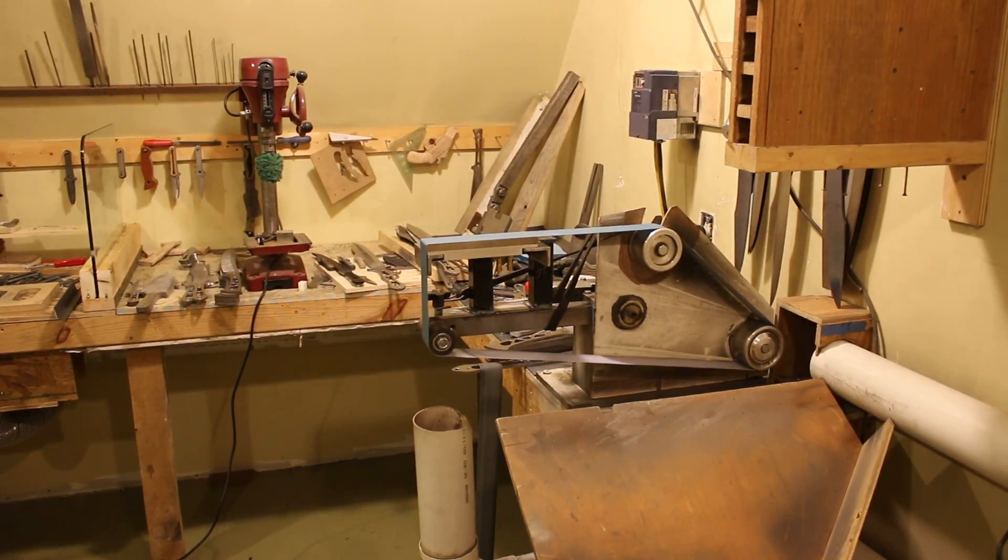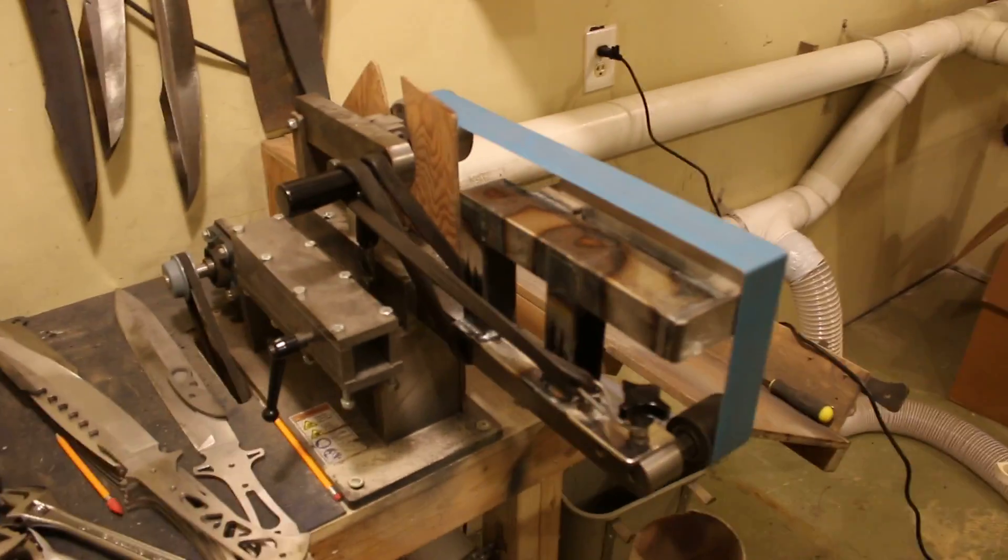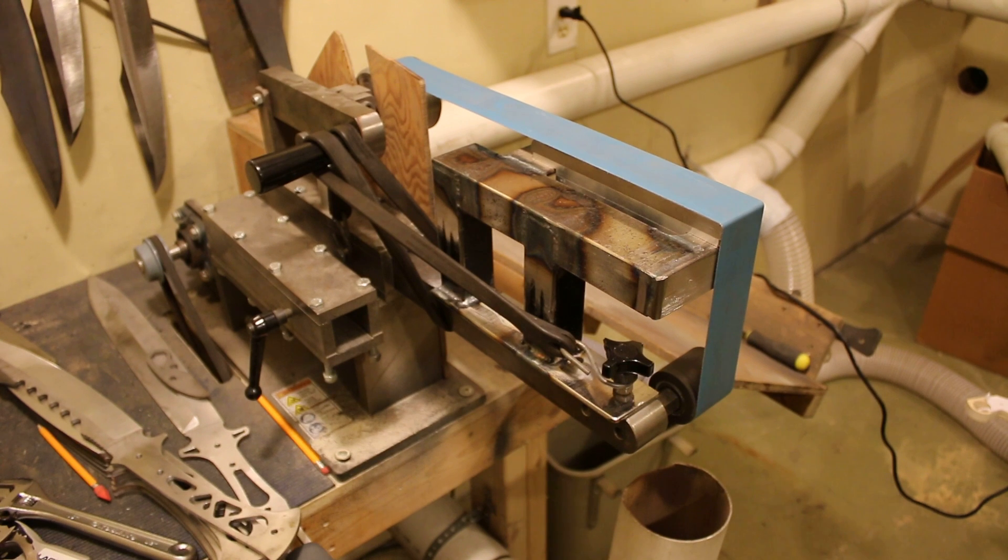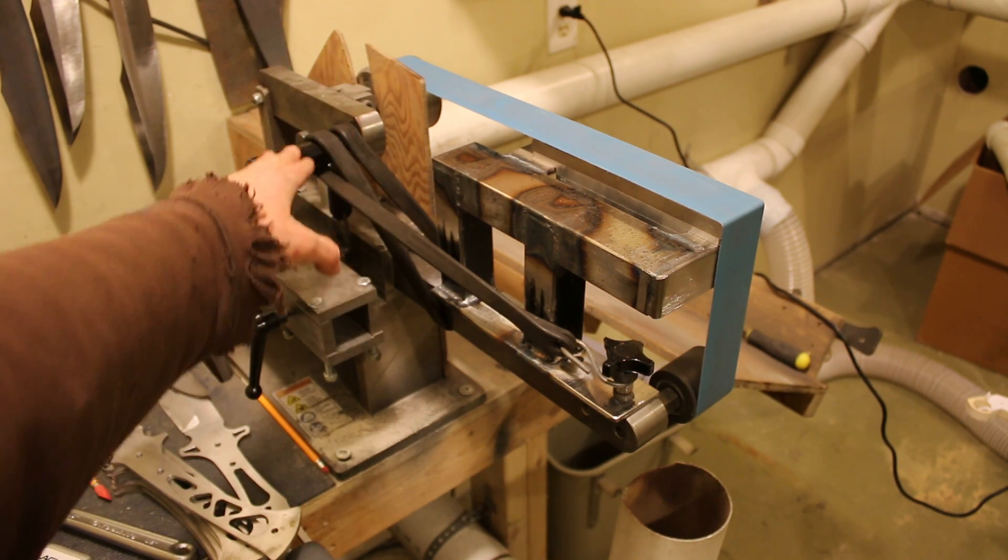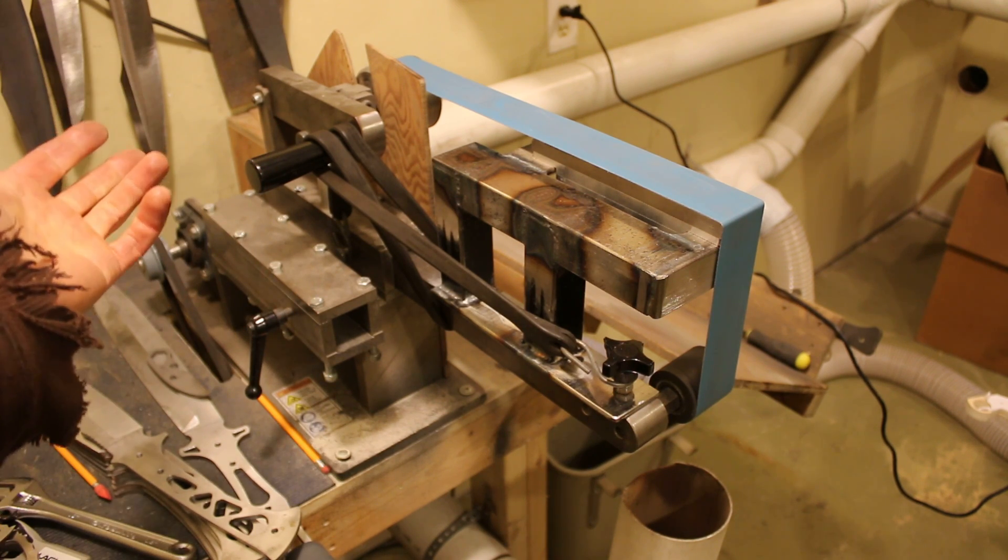The bungee cord you see in the background is just because I built the height of the thing a little bit too low. Not really too low, but I was expecting to have the tracking wheel arm be horizontal, because that's what they say you're supposed to be when you're doing your tracking.